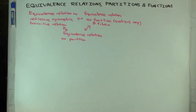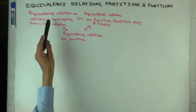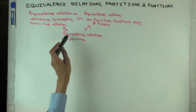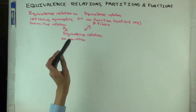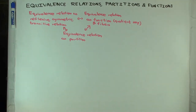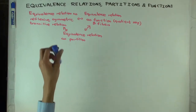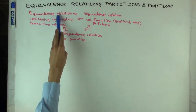This is a sequel video to another one where I define equivalence relation as a reflexive, symmetric, and transitive relation, and I explain how that's the same as saying equivalence relation as partition. Now I just want to clarify a little bit about what I mean by 'the same.' In mathematics, there's a very formal way when you say an equivalence relation - is it a set, is it a subset, is it a superset - but there's a more informal way of thinking, which says what kind of structural information is contained in an equivalence relation.